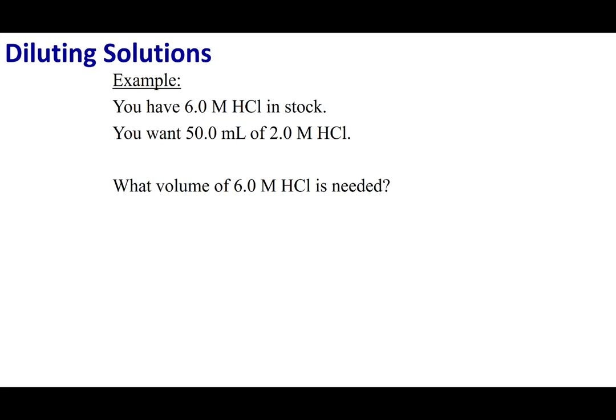So let's think about this. If I have something that's 6 molar HCl, that means I have 6 moles of HCl per 1 liter of solution. Now, if I add water to this, note it does not change the top. 6 moles is always going to be 6 moles. So one key thing to remember during a dilution is the initial amount of moles is going to equal the final amount of moles.